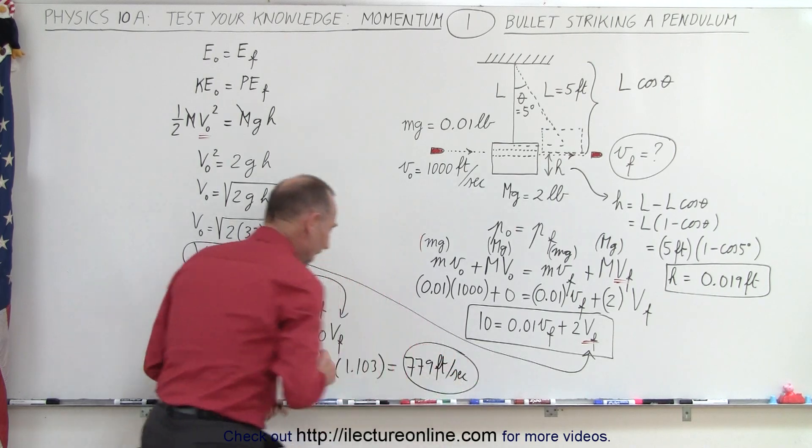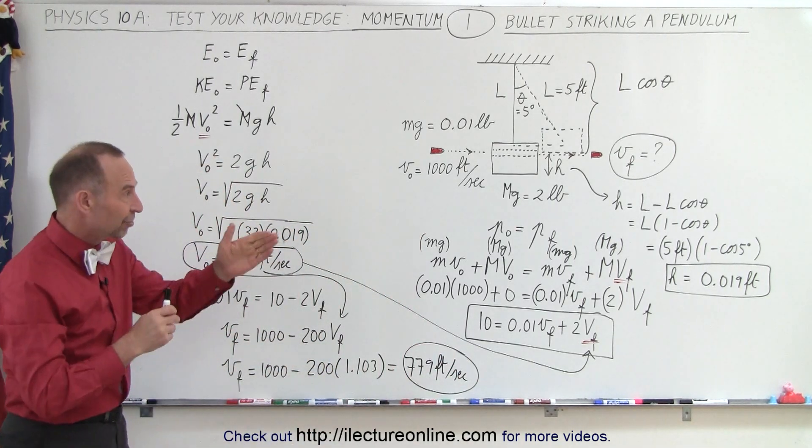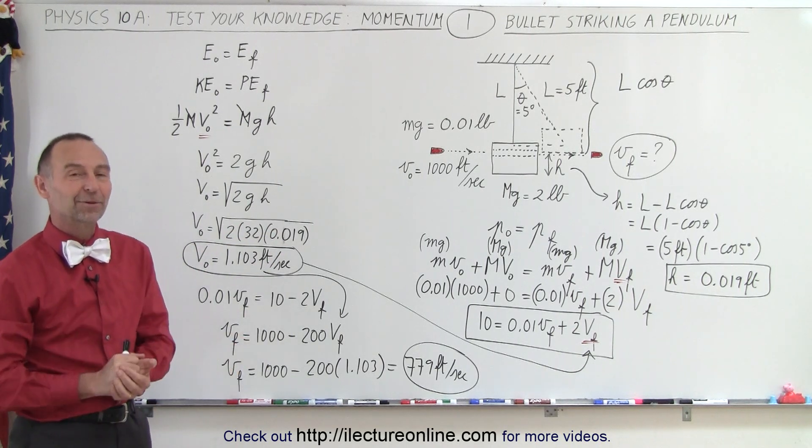And that is the final velocity of the bullet after it goes through the block, and that is how it's done.